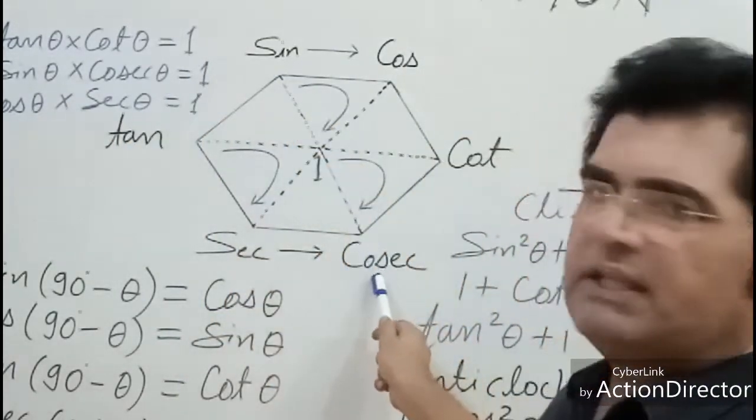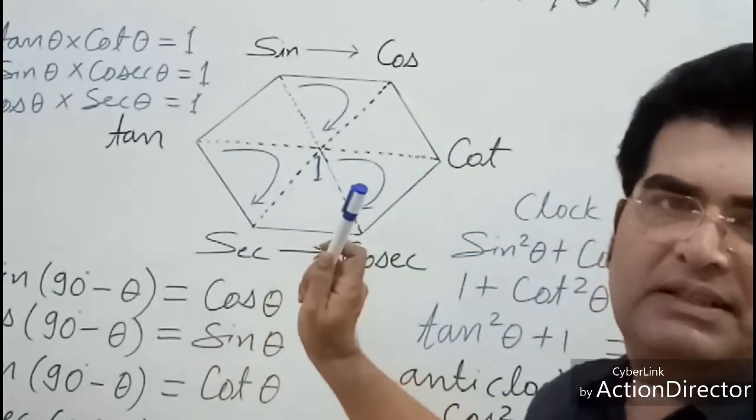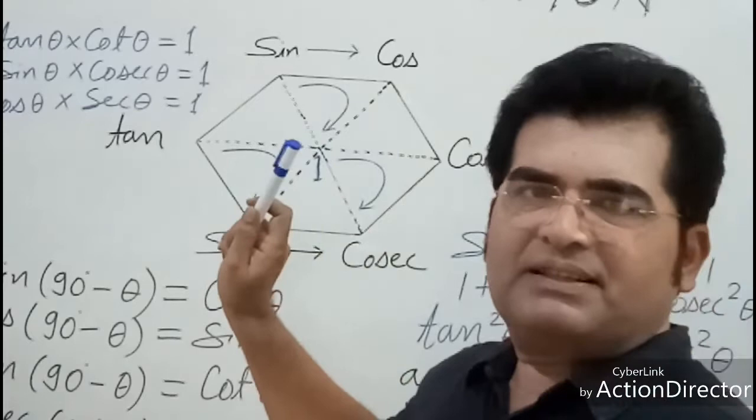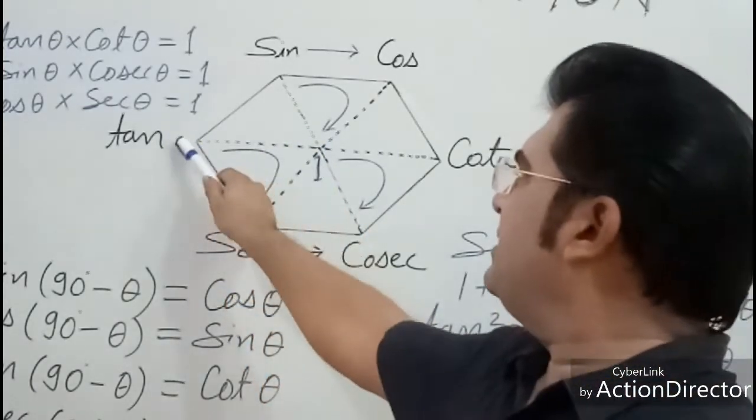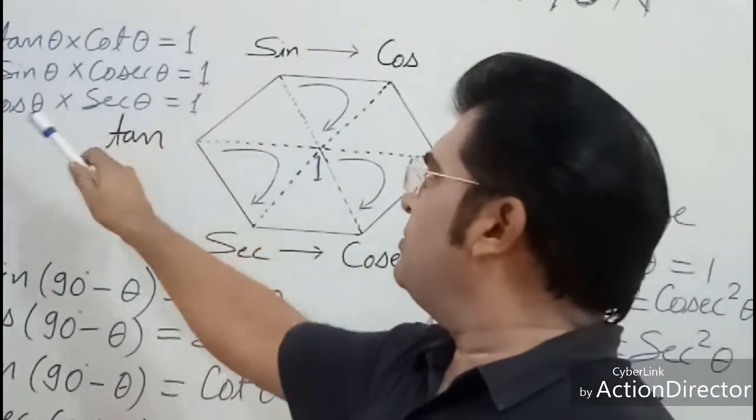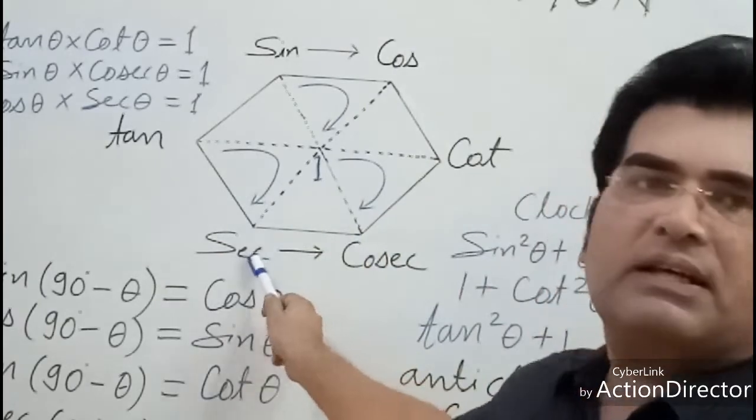Cos times sec equals one. You have to use this trick to remember it: tan times cot equals one, sin times cosec equals one, cos times sec equals one.